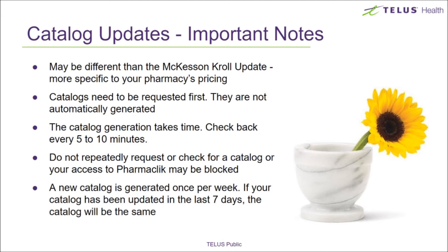A catalog needs to be requested first. Once requested, the catalog will be generated on PharmaClick, which takes some time. Wait 5 to 10 minutes to communicate and check for the catalog. A new catalog is created every 7 days, so if you've already updated within that time, you will not get a new catalog.